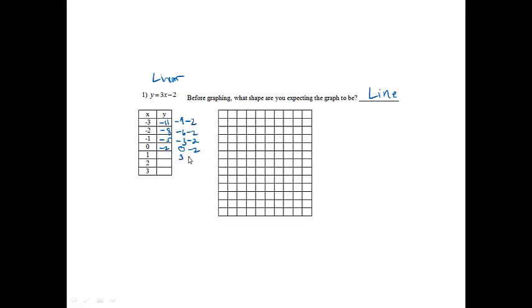And then 3 times 1 will give me 3, minus 2 is 1. 3 times 2 is 6, minus 2 is 4. And then 3 times 3 is 9, minus 2 is 7. So now I'm ready to graph.